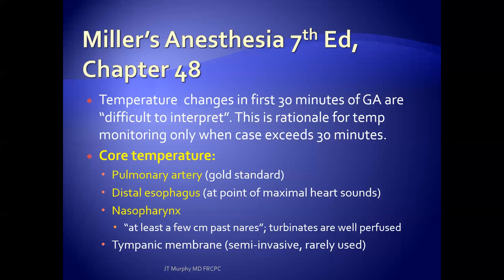Where should you measure temperature? The pulmonary artery is the gold standard, but we can't measure that in everybody. Studies have shown it correlates extremely well with distal esophageal temperature — perhaps at the point of maximal heart sounds if using an esophageal stethoscope. The nasopharynx is also a core temperature site, though placement of the nasopharyngeal probe can be more difficult. The probe should be inserted until resistance is felt — a few centimeters past the nares — placing it in the area of the turbinates, a well-perfused area of the nose.